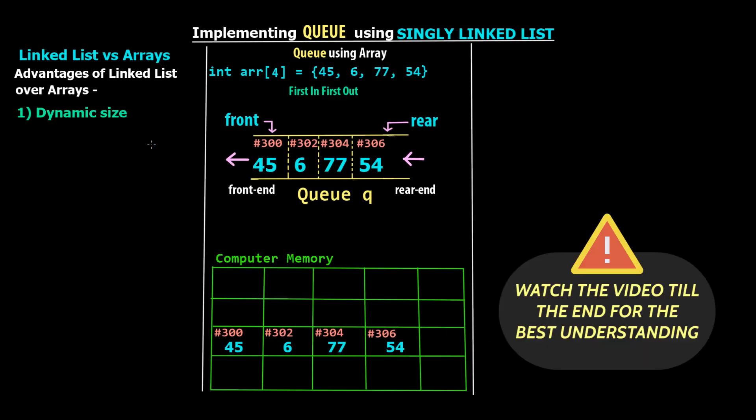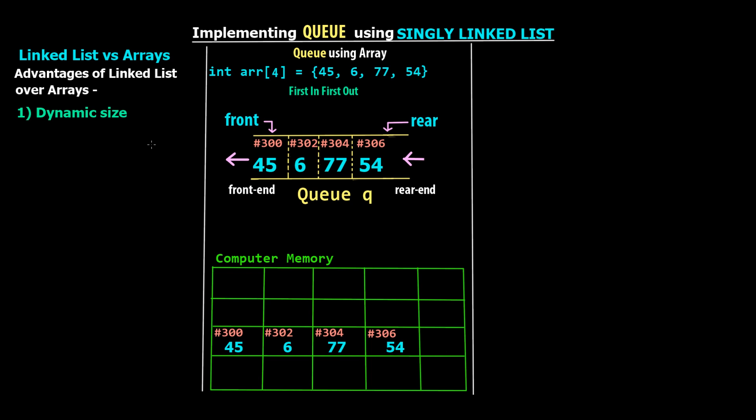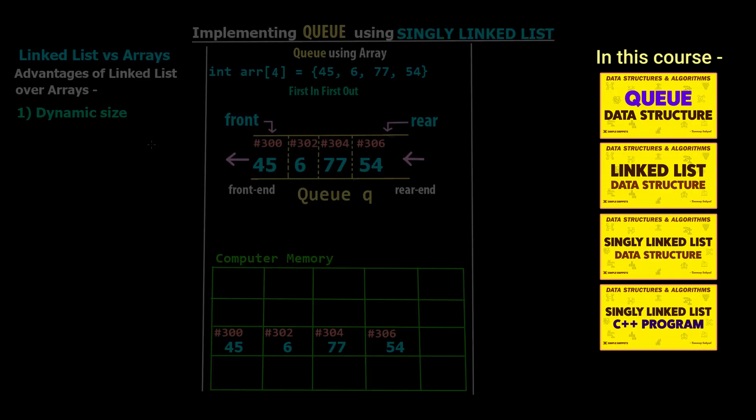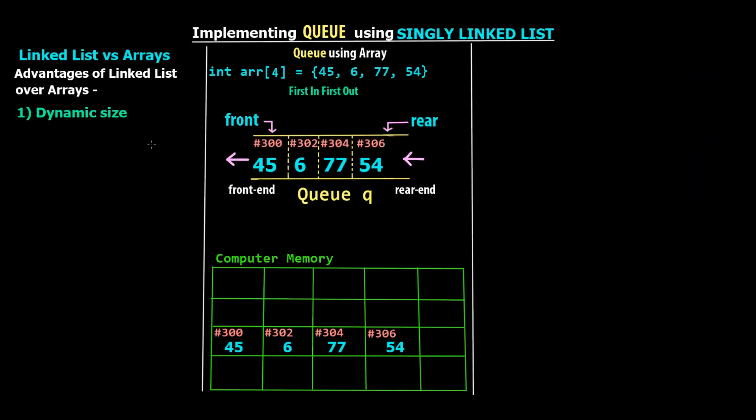Before we start off, I'm assuming you guys already know what is a queue data structure. If not, we've already covered queue using array and the general data structure queue and the different operations — how it works, that is first in first out — and all those basic topics in previous tutorials. So please go ahead and watch that first if you don't know what is a queue data structure. For those who are here to understand queue using linked list, this video is just for you. With that being said, let's get started.